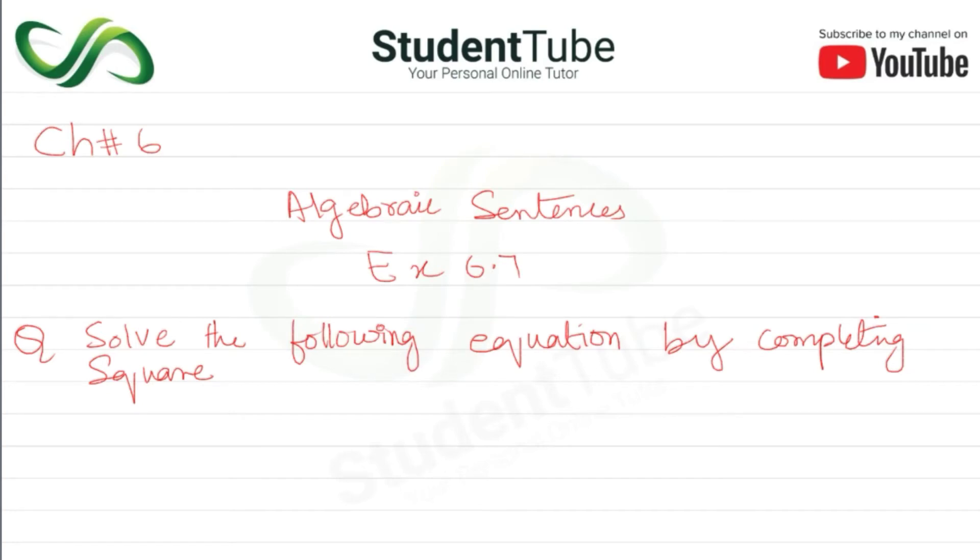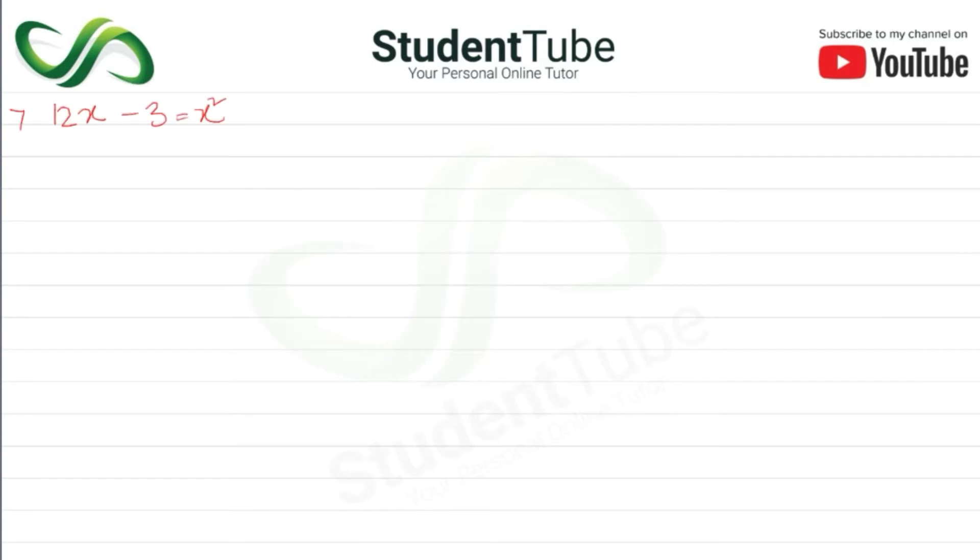Assalamualaikum, welcome to Student Tube. In today's lecture, Chapter 6, Algebraic Sentences, Exercise 6.7, we will solve the following equation by completing the square. Question number 7 is: 12x - 3 = x². Let's solve this equation.